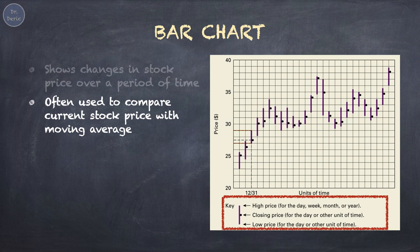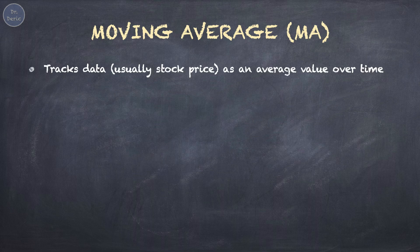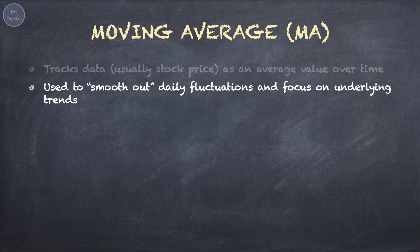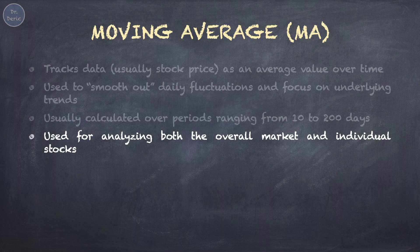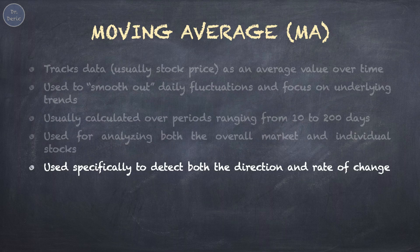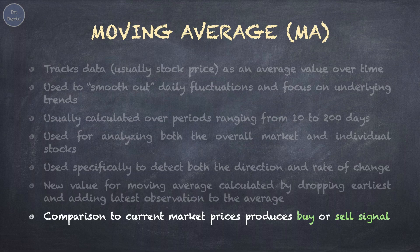Bar chart is often used to compare the current stock price with the moving average. When current price goes above or below a moving average, it indicates a significant price change. Moving average tracks stock price as an average value over time. It is used to smooth out daily fluctuations and focus on underlying trends. It is usually calculated over periods ranging from 10 to 200 days. Moving averages are versatile tools that can be used for analyzing both the overall market and individual stocks, and can also be used to detect both the direction and rate of change. A new value for moving average can be calculated by dropping the earliest and adding the latest observation to the average. Based on the moving average value, comparison to current market prices produces a buy or sell signal.